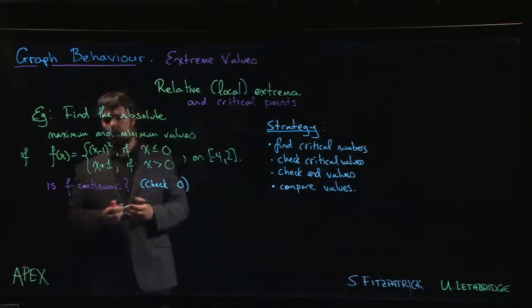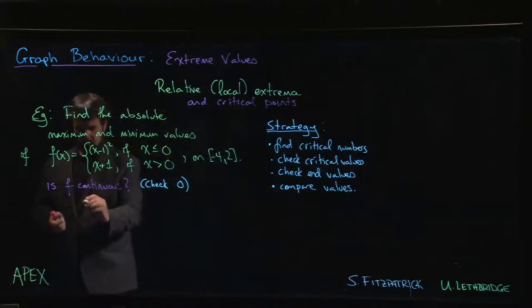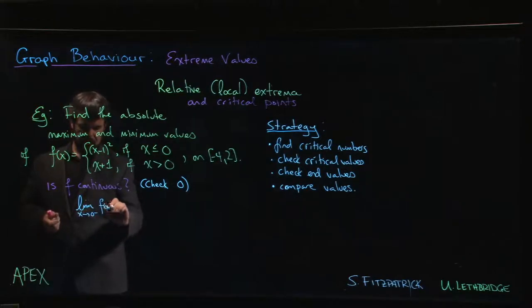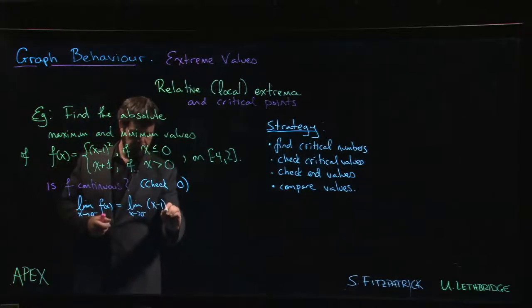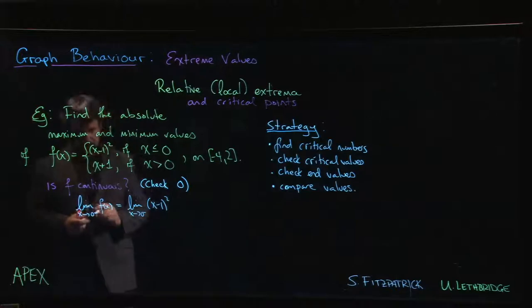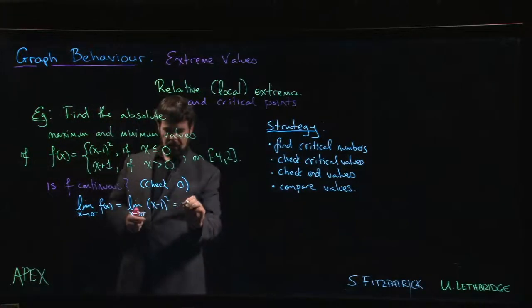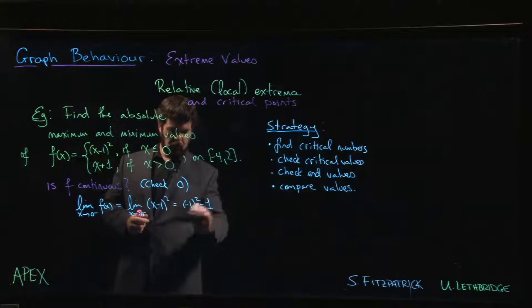Okay, so remember how we check this. Well, the limit as X approaches 0 from the left of f of X is the limit as X approaches 0 from the left, so from the left means less than 0, means we should be using X minus 1 squared, so we get minus 1 squared which is 1.